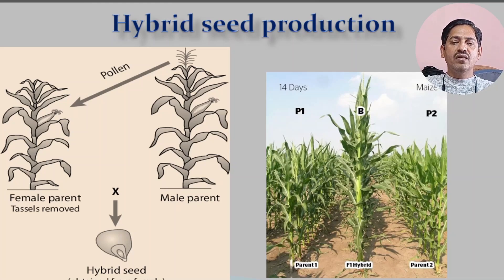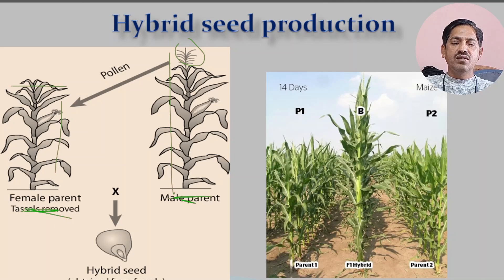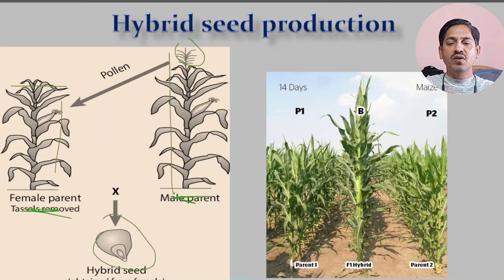Hybrid means the progeny obtained by making a cross between two genetically dissimilar parents. For example, one parent may be tall and another may be dwarf, or one plant has a tassel and the other does not. We make a cross between these genetically dissimilar genotypes to get the hybrid.